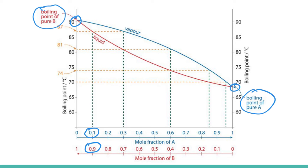So if we started with this ratio of 0.1 mole fraction of A and 0.9 of B and we were to heat it up, if we come up to our liquid curve, that would have a boiling point of 87 degrees.